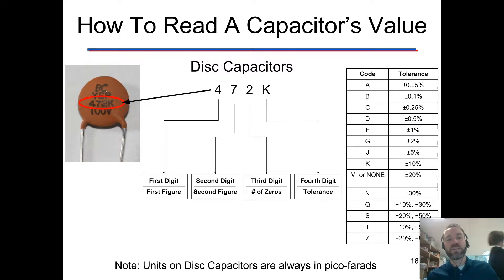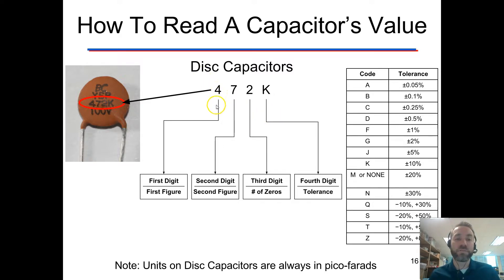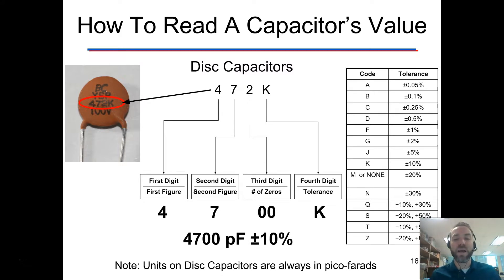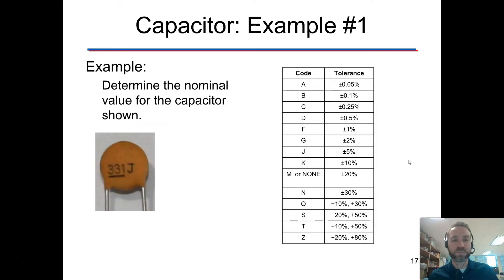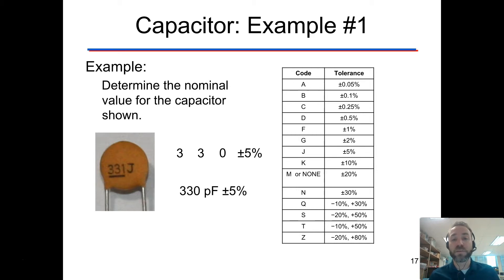For ceramic disc capacitors, those are listed in picofarads and we have to decode them to read their values. The first digit represents our first figure, the second digit is our second figure, and the third digit is actually the number of zeros. So for this one — 472 — we have 4700 picofarads. It's not 472,000; it's 4700 picofarads. The K at the end corresponds to tolerance, which is plus or minus 10 percent. Let's try one on your own. We get a three and a three with one zero: 330 picofarads, plus or minus five percent for the J.